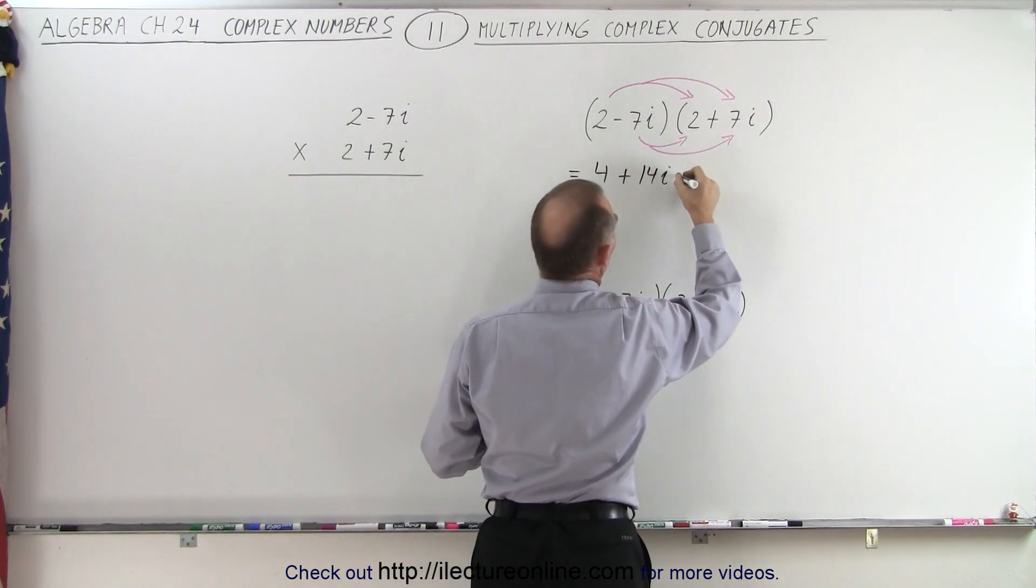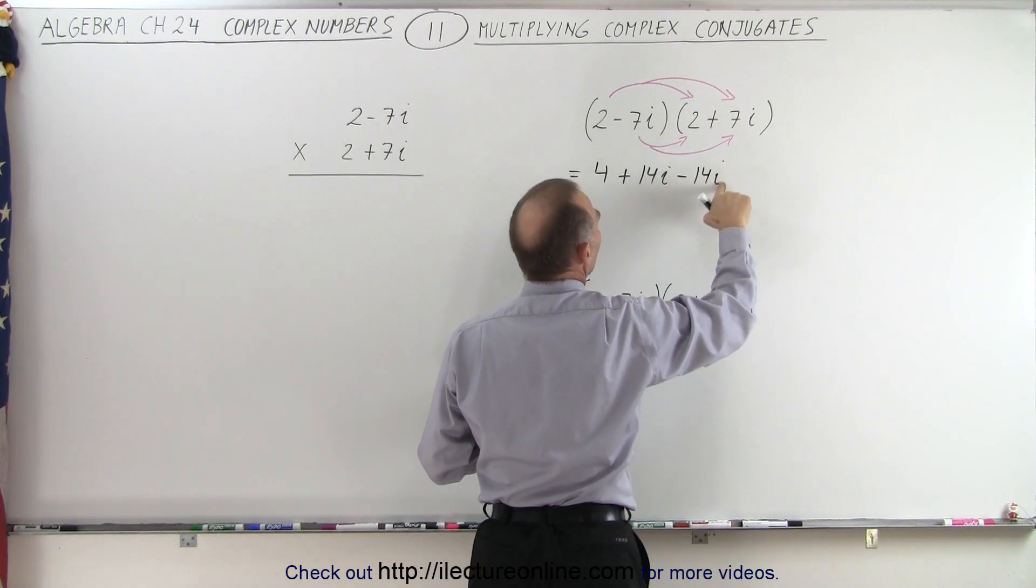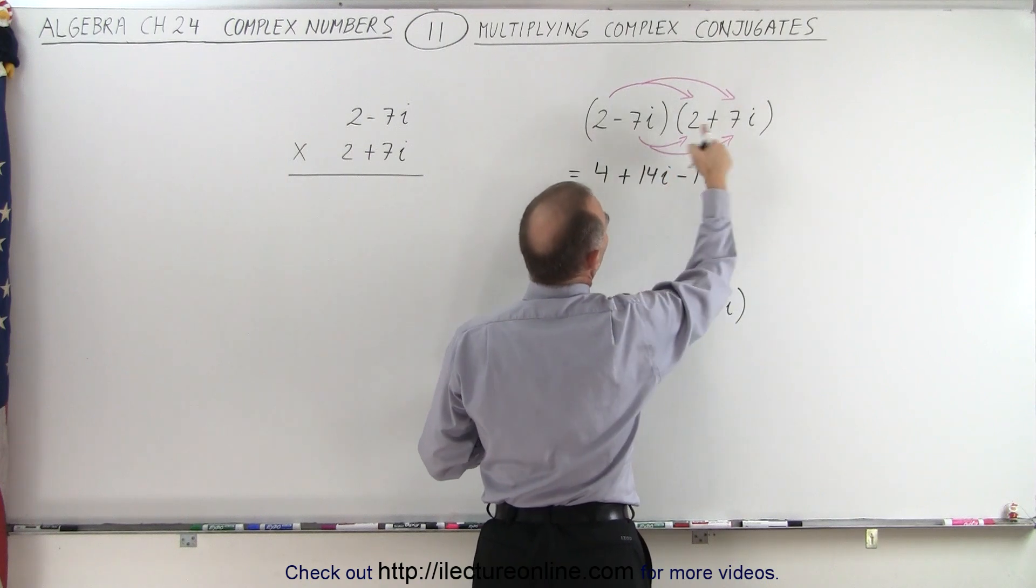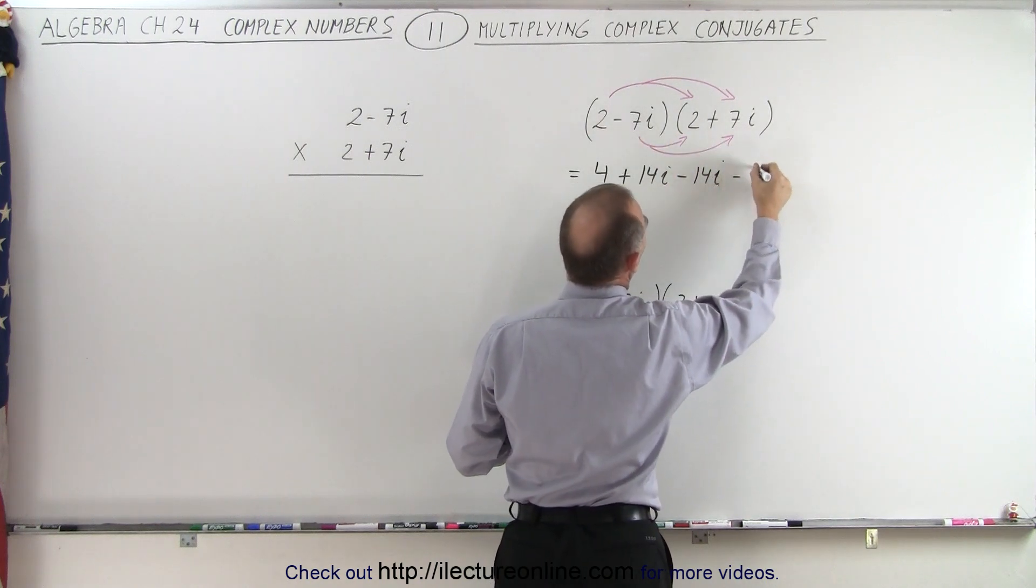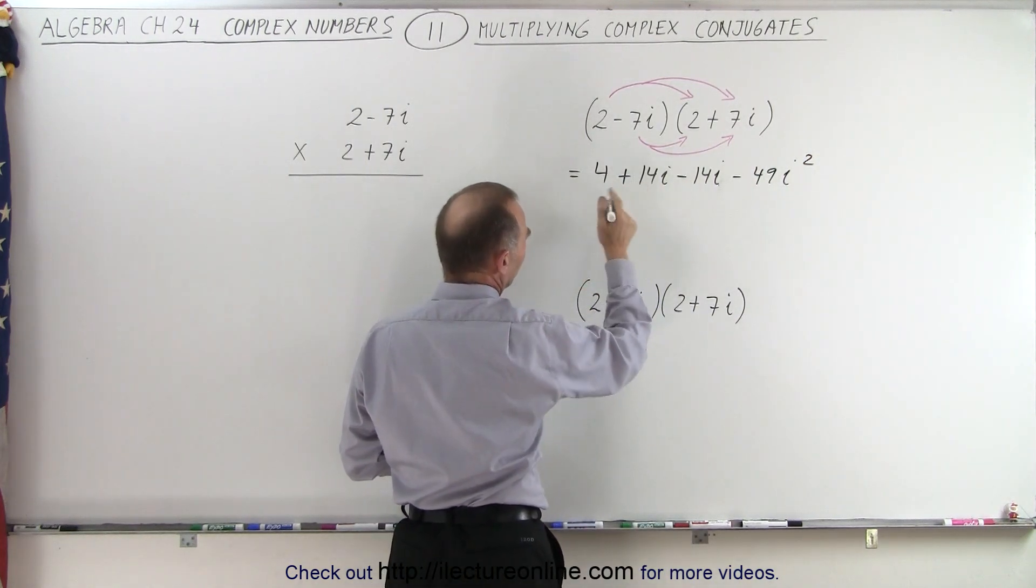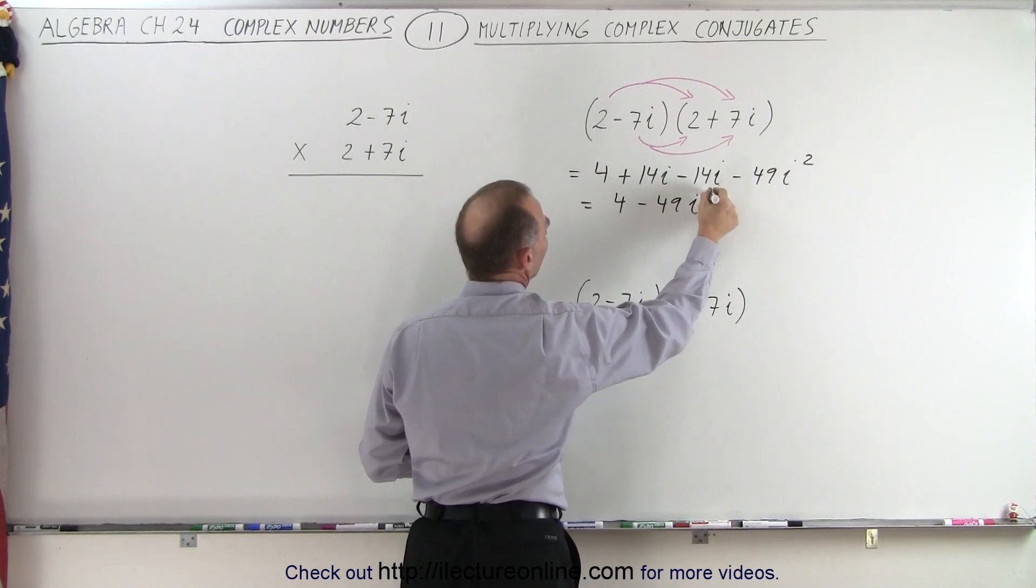2 times a negative 7i gives us negative 14i. And here it's quite clear why the imaginary part disappears. It should be an i right there. And then we multiply these two together. We get minus 49i squared. So when those two disappear, that leaves us with 4 minus 49i squared.